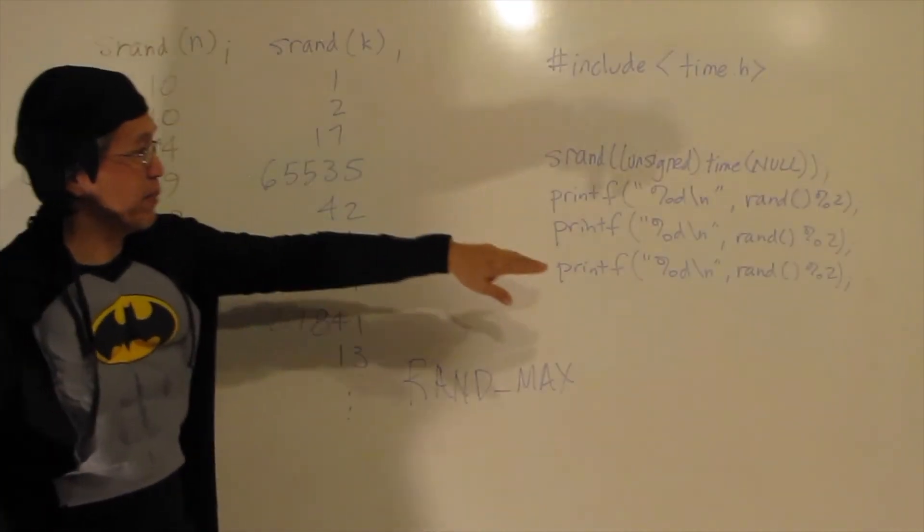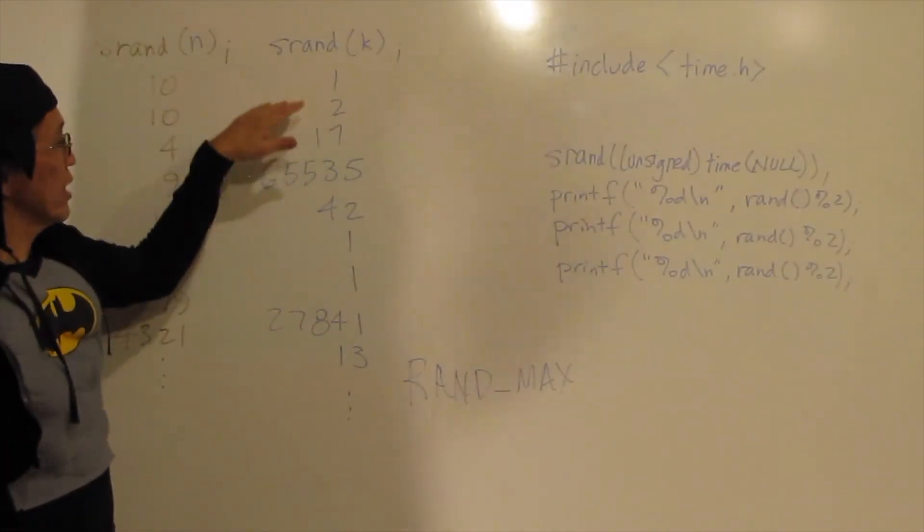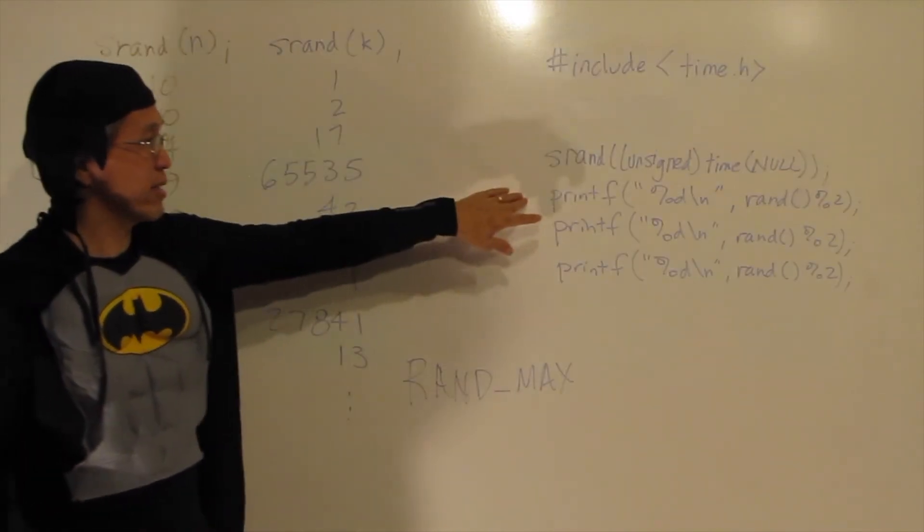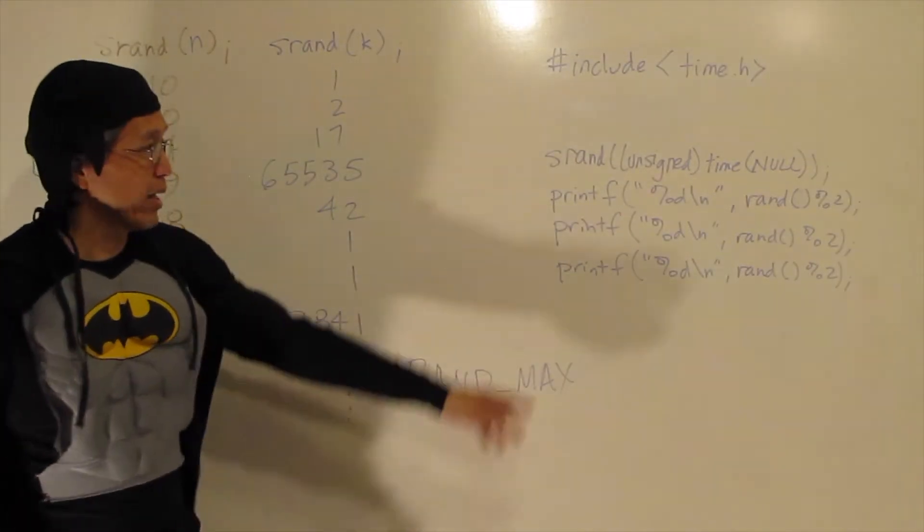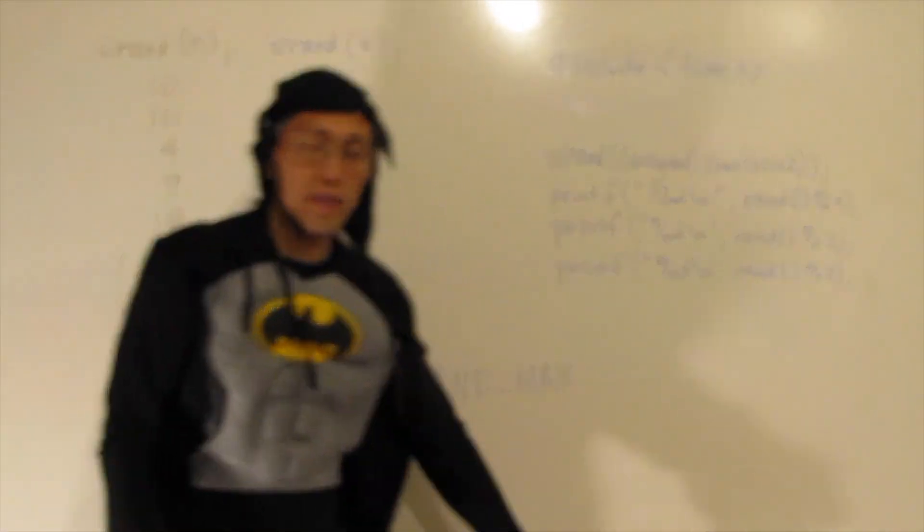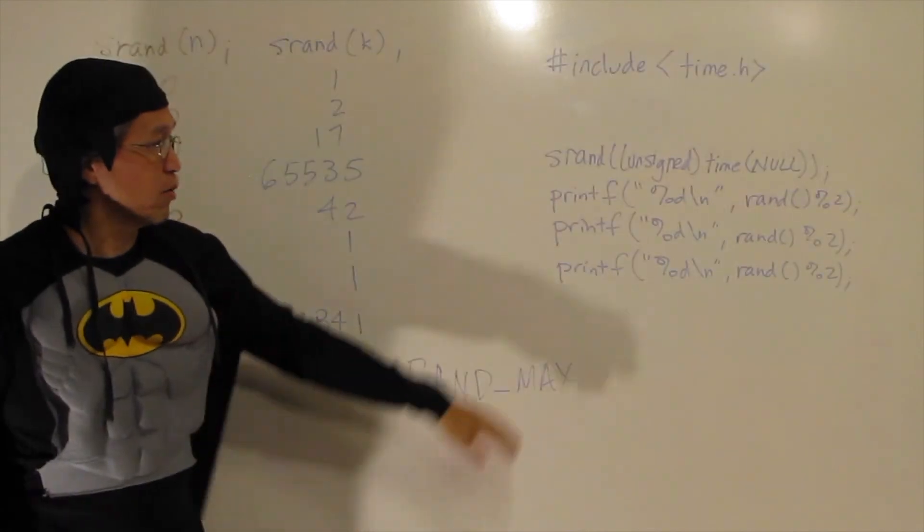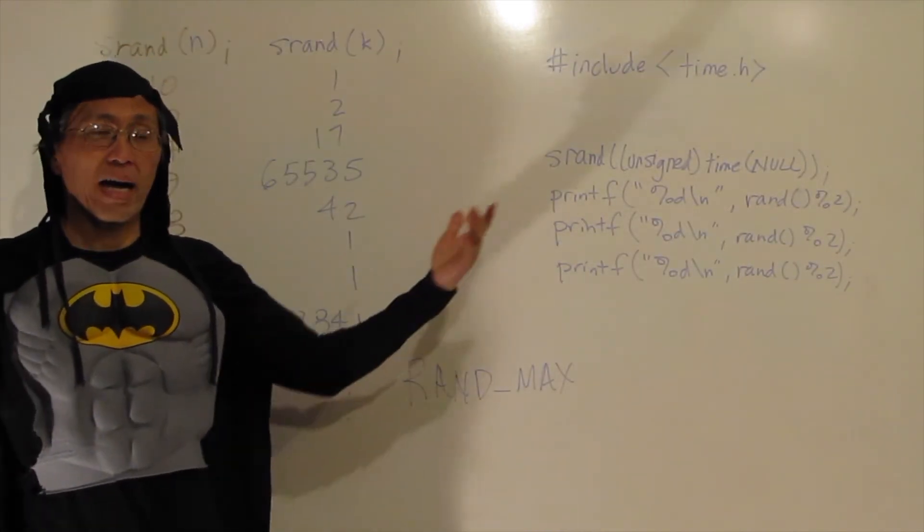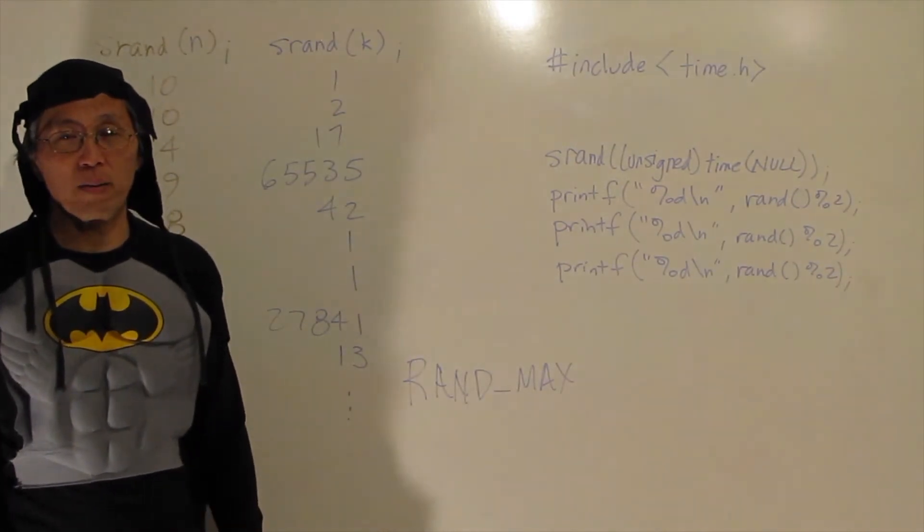And then every time you call this function RAND, you'll get the next number in the sequence. So here is a set of random numbers that just gives you 0 or 1. I do RAND modulus 2. That will only give me a 0 or 1. And this will give me random numbers that seem to be not dependent on the last random number that was called.